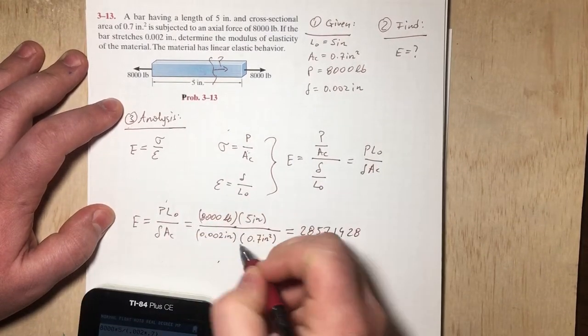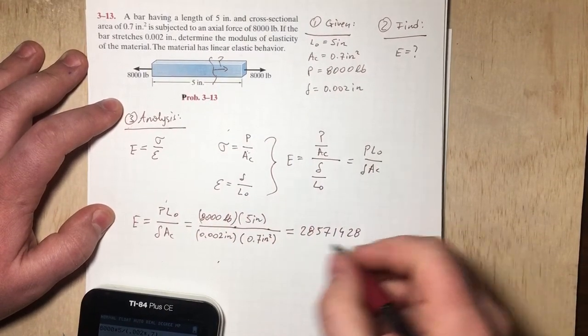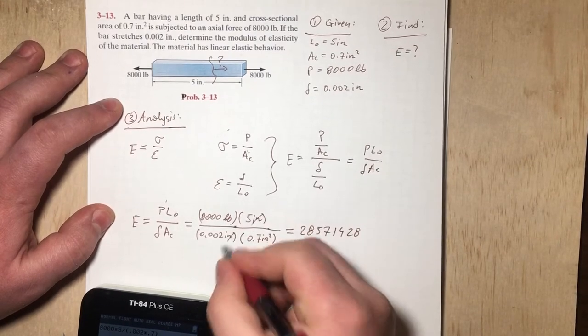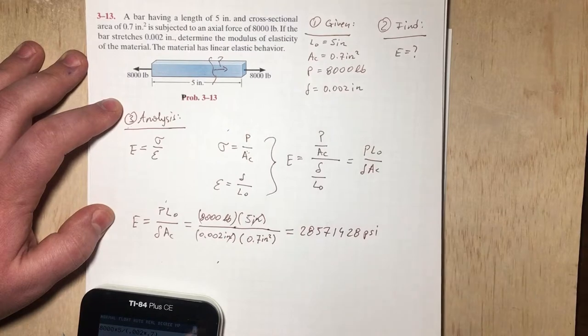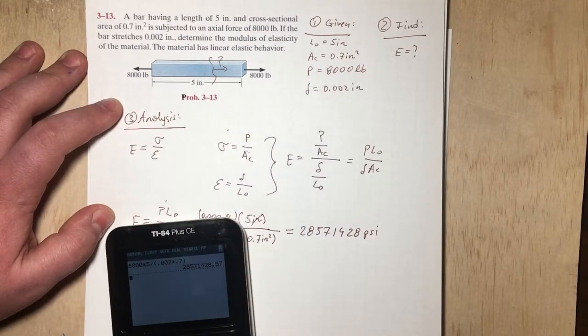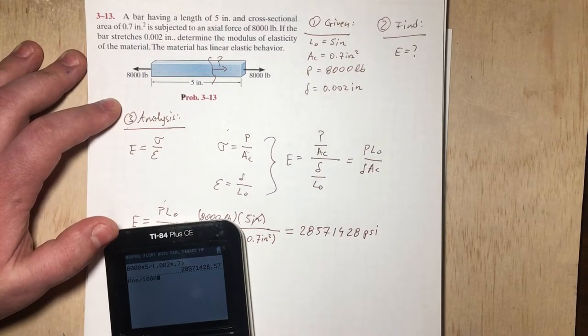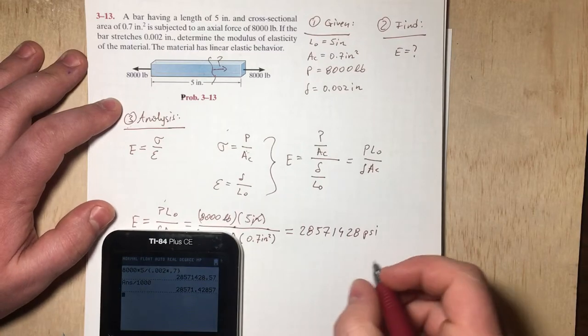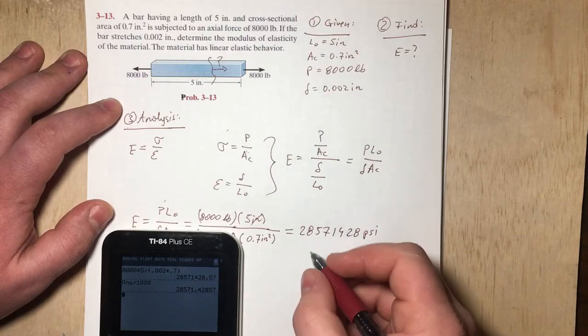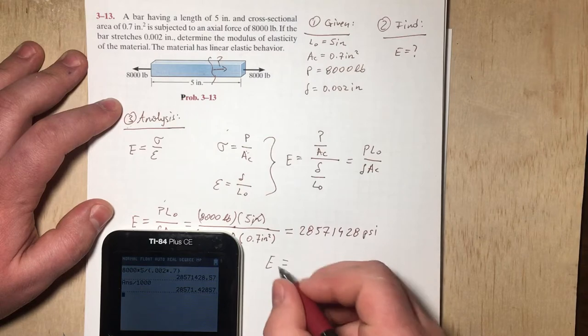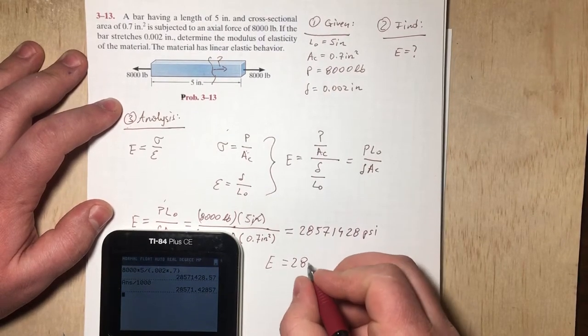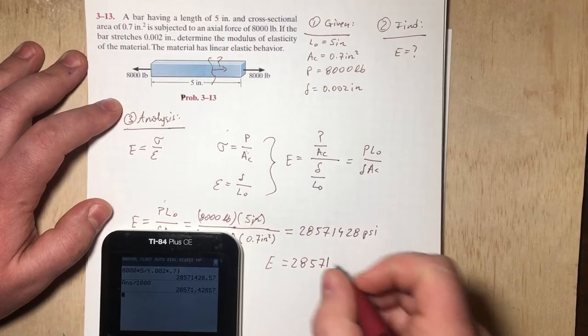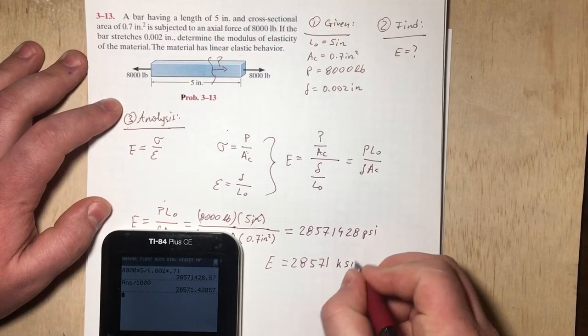And as we said, we have pound over square inch, because those will cancel. We have psi, pounds per square inch. So then we can divide by 1,000 and get ksi, which is kip per square inch. So E is going to be 28,571, approximately, ksi.